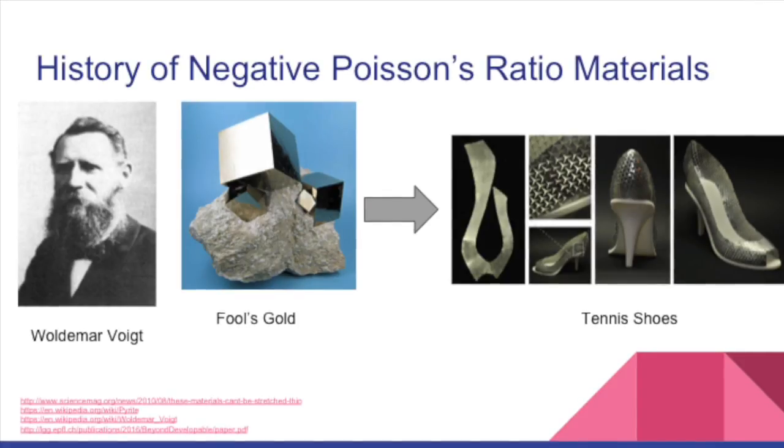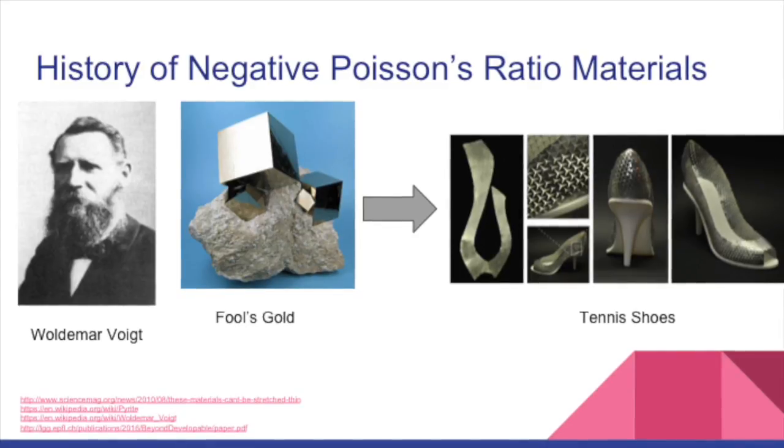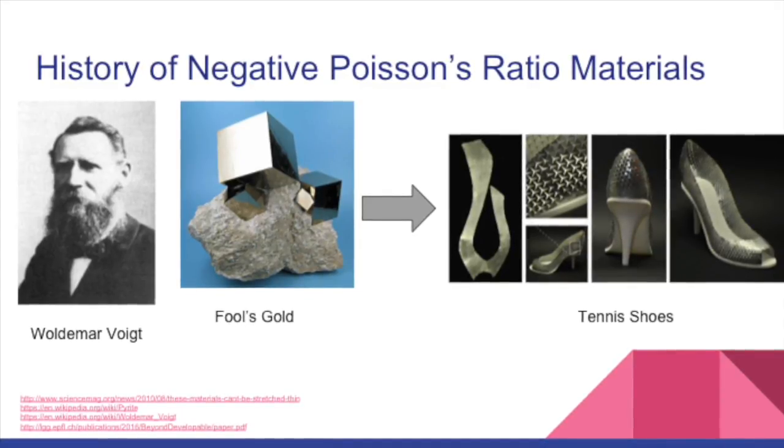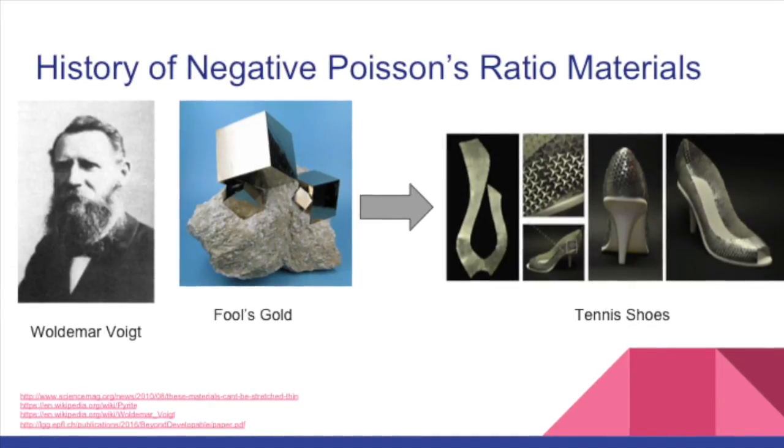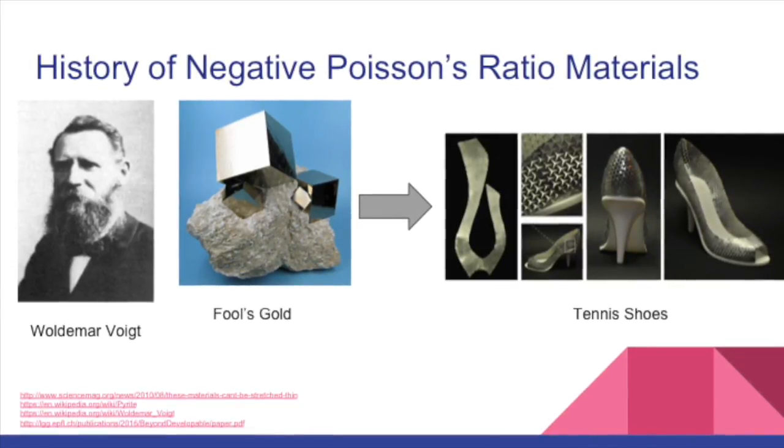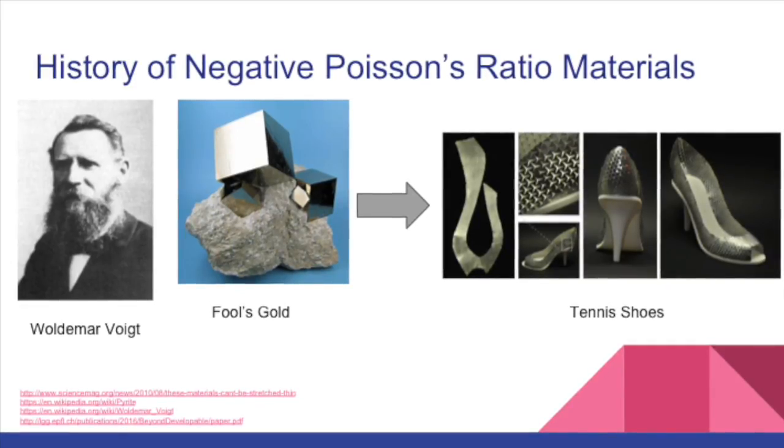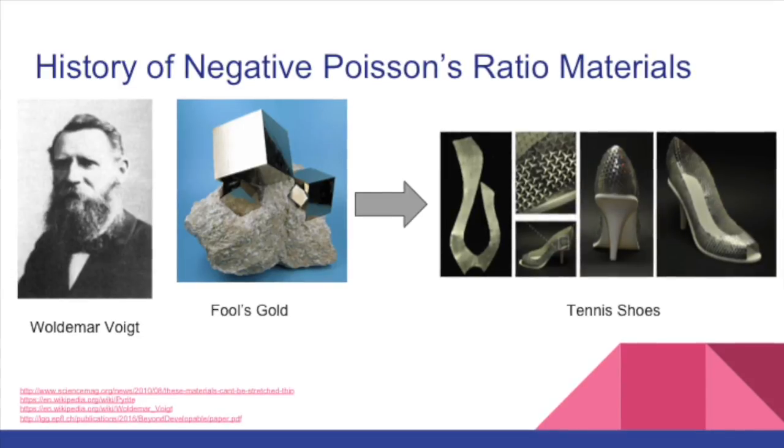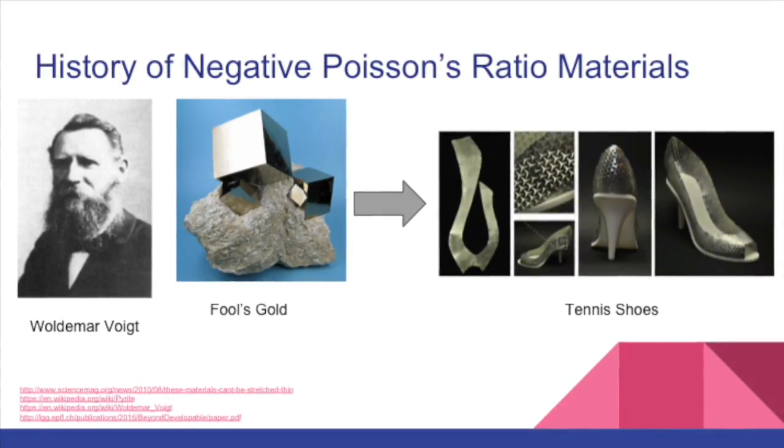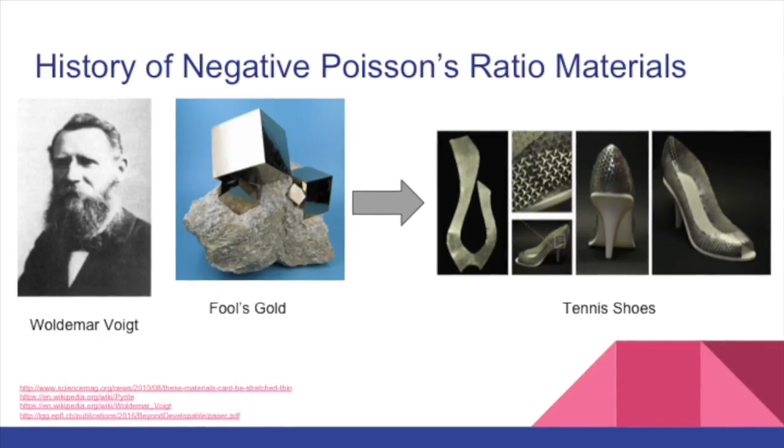Here's a little history. Negative Poisson's Ratio materials were discovered by a German physicist named Woldemar Voigt in the late 1800s. He published a paper in 1893 on iron pyrite, also known as fool's gold, which has a Poisson's Ratio of negative 0.14. However, at that time, no one could explain this phenomena and no one knew what to do with these materials, so the work went unnoticed for almost a century. Research resumed in the 1980s and resulted in some nice shoes.